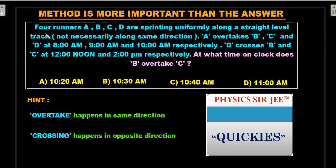Here we go with the formal wording: Four runners A, B, C, D are sprinting uniformly along a straight level track, not necessarily along the same direction. A overtakes B, C, and D at 8 a.m., 9 a.m., and 10 a.m. respectively. D crosses B and C at 12 noon and 2 p.m. respectively. Using this information you are supposed to find at what time on the clock does B overtake C. There are four options on the clock that are given. During this problem, the word 'overtake' means it's happening in the same direction between two runners, and the word 'crossing' implies that the two people are crossing each other in opposite directions.